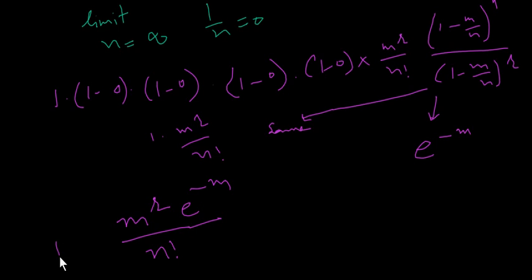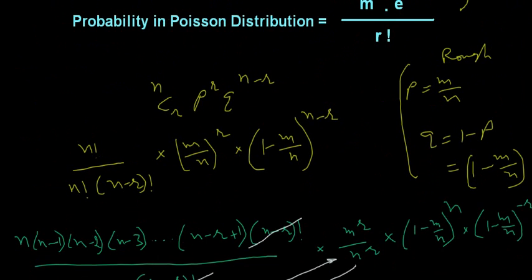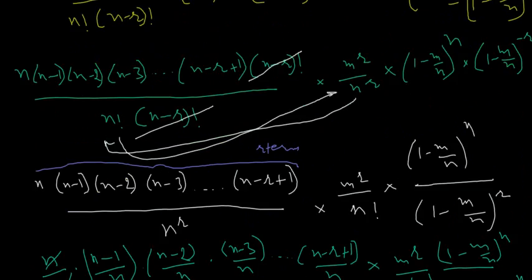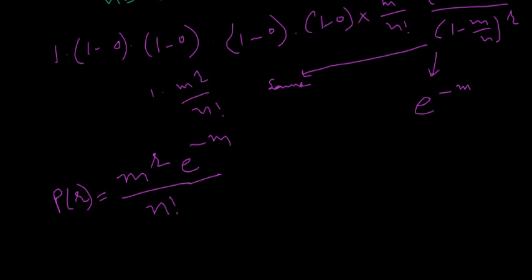This is the Poisson distribution probability formula, which we have derived from the binomial distribution formula. By taking the binomial formula and applying the limit as n approaches infinity, we reach the Poisson formula. This is what we set out to prove. Thank you very much.